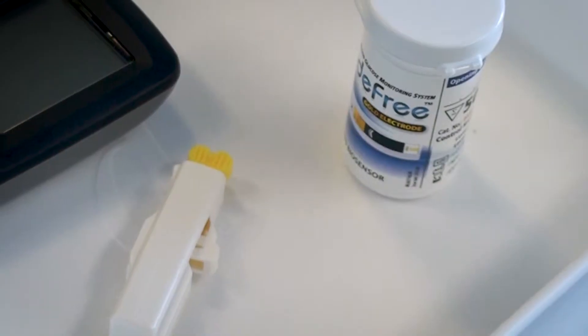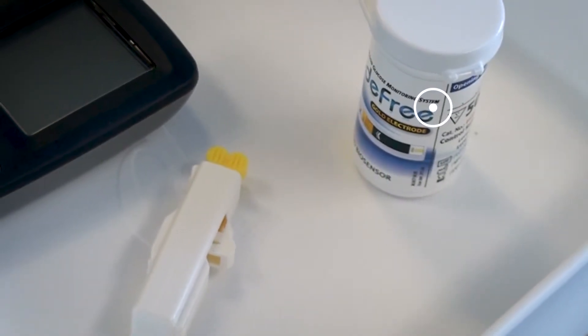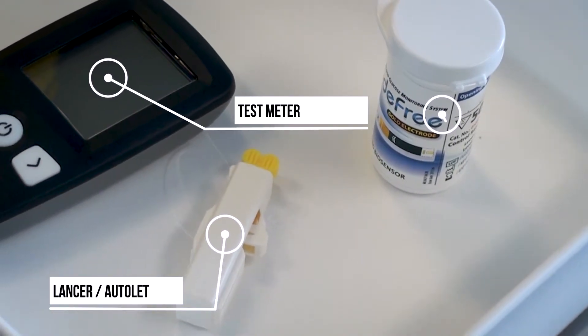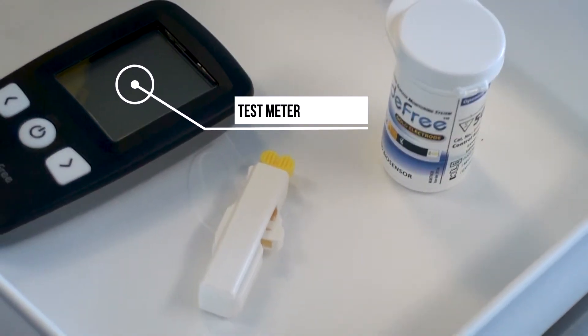You must then assemble the appropriate equipment: the test strips, the lancet or autolet, the test meter itself, a sharps bin, and cotton wool or gauze.